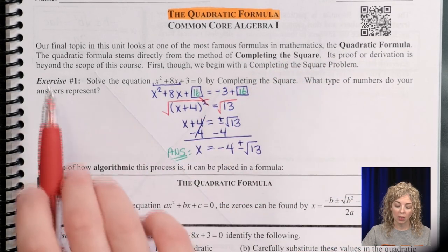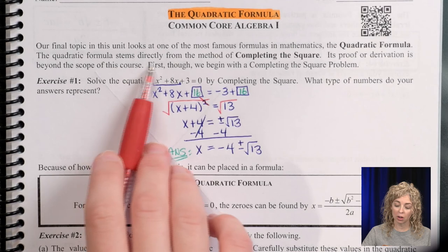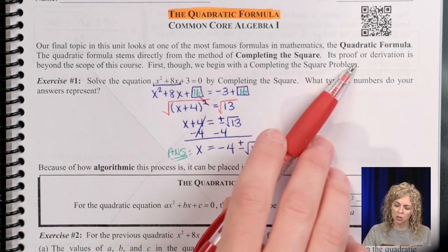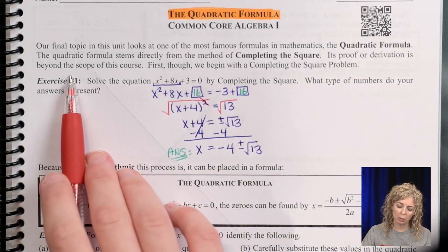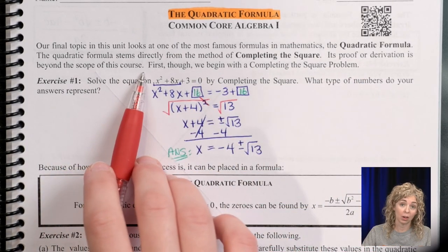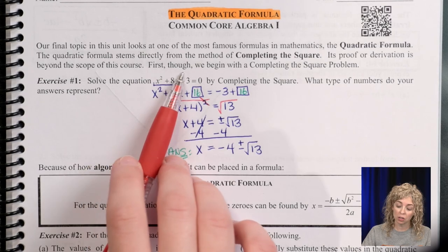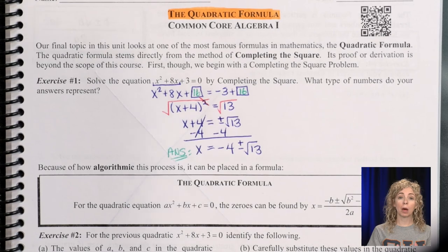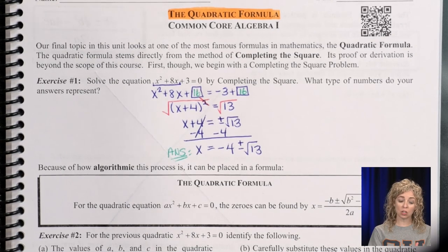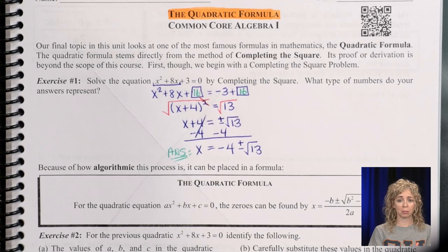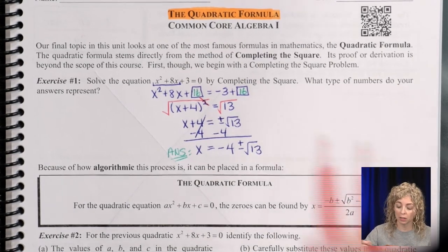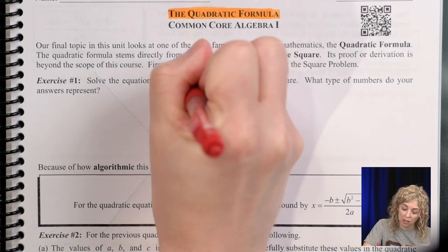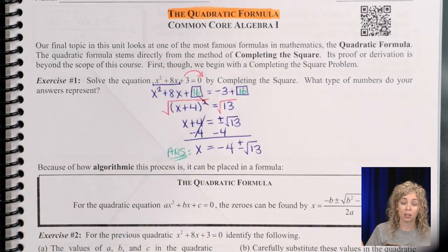The quadratic formula stems directly from the method of completing the square, which is what your last lesson was on. Its proof or derivation is beyond the scope of this course, so we're not going to prove it. First though, we begin with the completing square problem. I don't want us to go through and solve this problem. I want to save some time in the note page and just review the process of completing the square, which is also known as the box method.